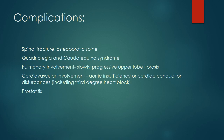Complications: Spinal fracture can occur with even minor trauma to the rigid, osteoporotic spine. Involvement of the cervical spine can lead to quadriplegia. Cauda equina syndrome is another complication of long-standing spinal disease. Pulmonary involvement is characterized by slowly progressive upper lobe fibrosis. Cardiovascular involvement may manifest as aortic insufficiency or cardiac conduction disturbances, including third-degree heart block. Prostatitis occurs with increased frequency in men.